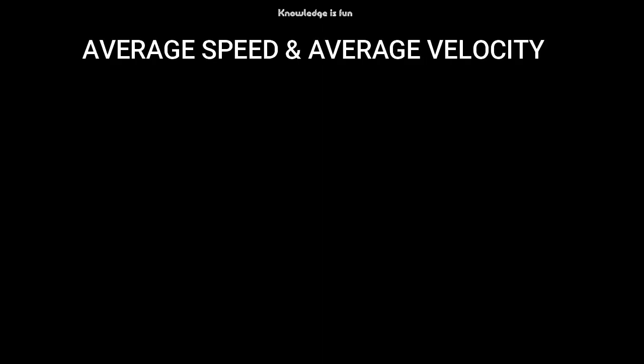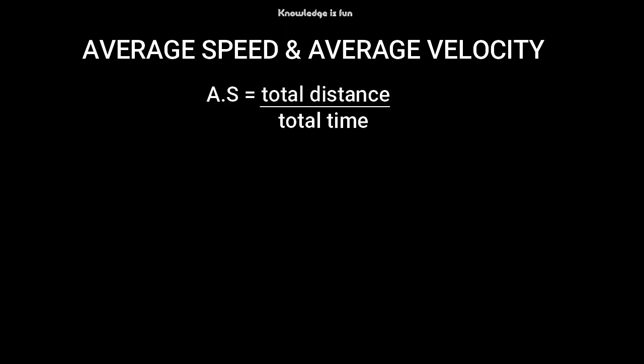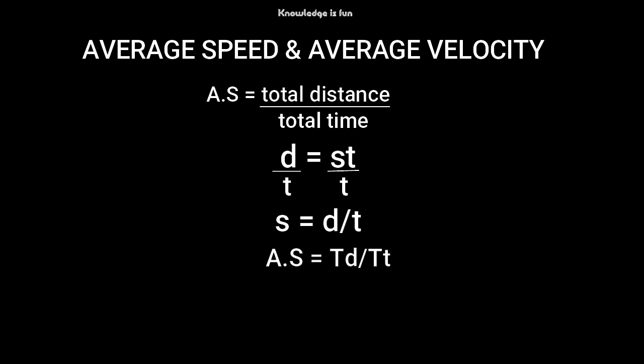There are some mathematical formulas you need to know about speed and velocity. There is something called average speed. The formula for average speed is: average speed equals total distance over total time traveled by the object. From the base formula distance equals speed times time, dividing both sides by time gives speed equals distance over time, and so average speed equals total distance over total time.